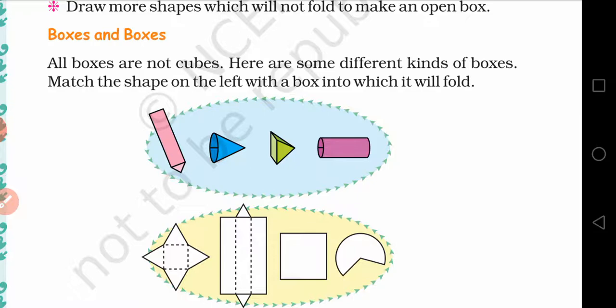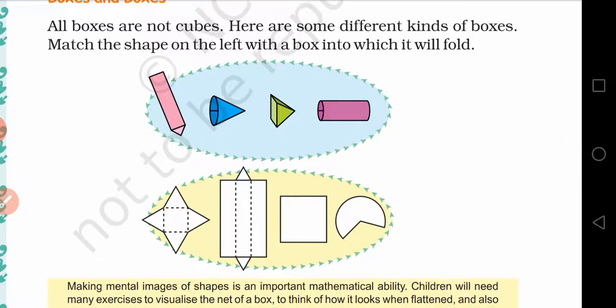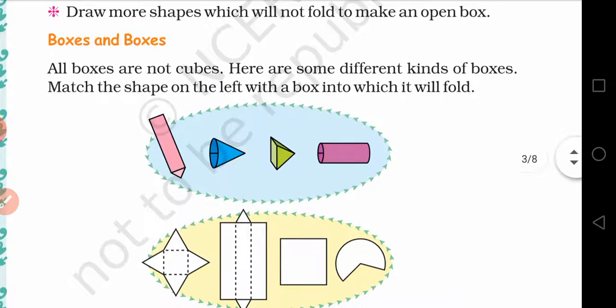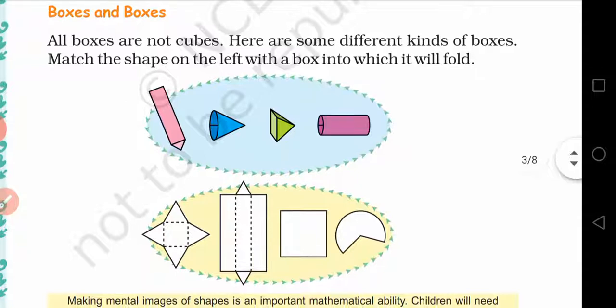In the last class, we learned two types of boxes: a cube and an open box. To make a cube, we made a square grid. To make an open box, we left one face and worked with five faces. Today's class we are going to discuss different kinds of boxes.